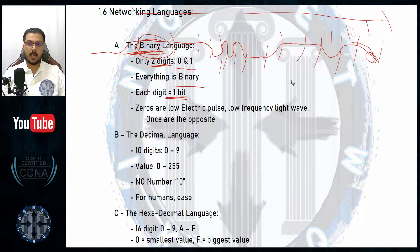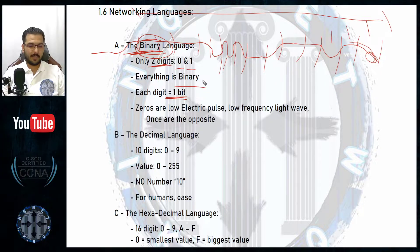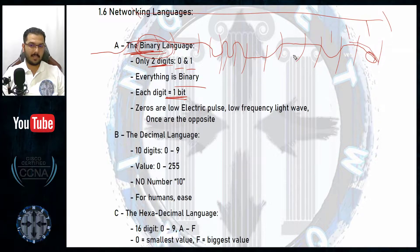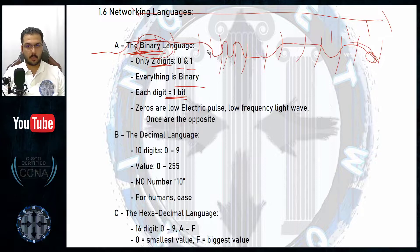If you wanted to express the number 10 in binary, I will have a video for that. The idea is that the entire word or number sent through the cable has a complete size, whether it was containing ones and zeros or a mix of them. Zeros are a low electric pulse or low frequency light wave.